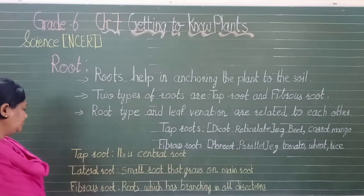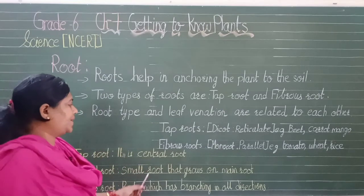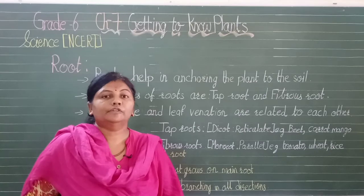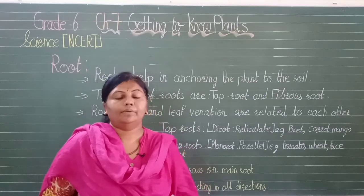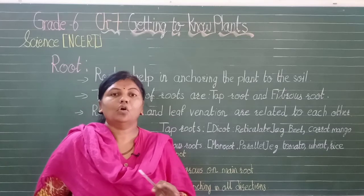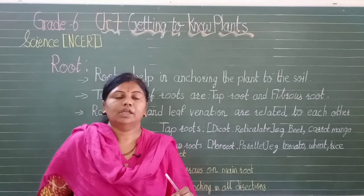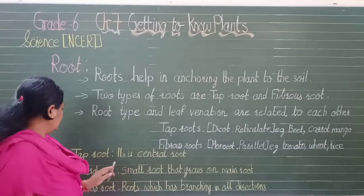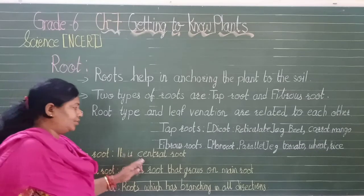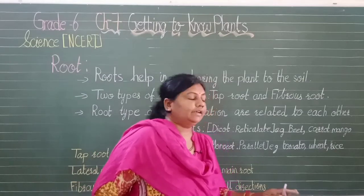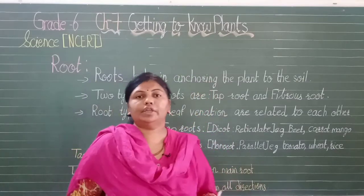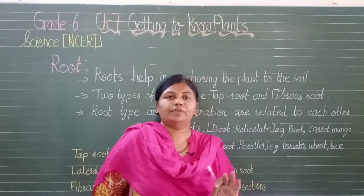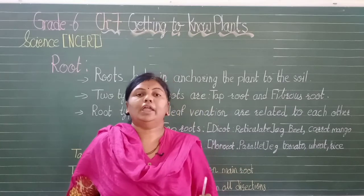Fibrous root has branching in all directions and has no single main root. Many tiny roots are present. Lateral root is a small root that grows on the main root, while taproot is the central or main root of the plant.